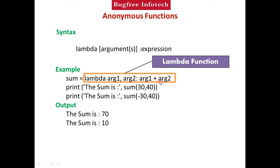We execute the expression: arg1 plus arg2. So 30 is passed to arg1 and 40 is passed to arg2. We add them together — 30 plus 40. The result 70 is returned and stored. Also shown: if we compute arg2 minus arg1, that is 40 minus 30, we return 10. So the final result printed is 10.